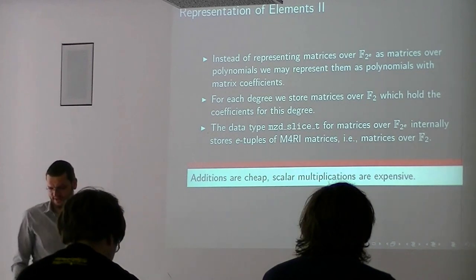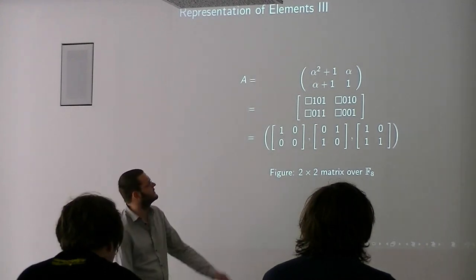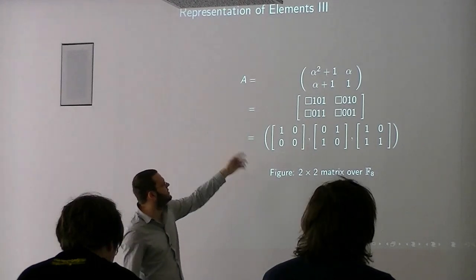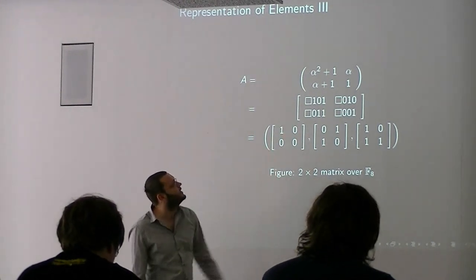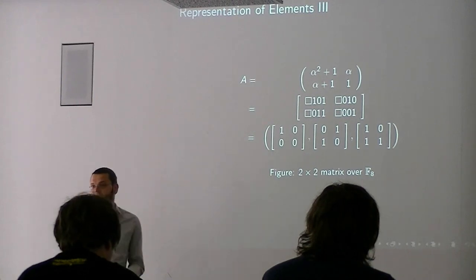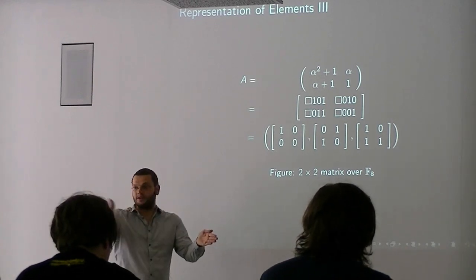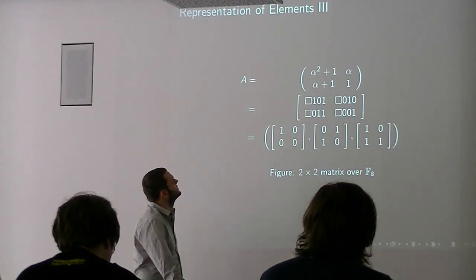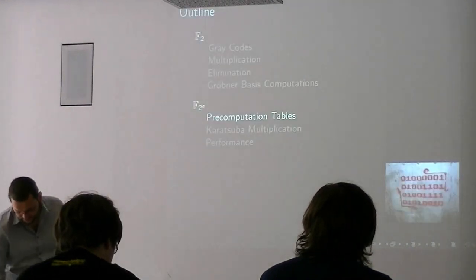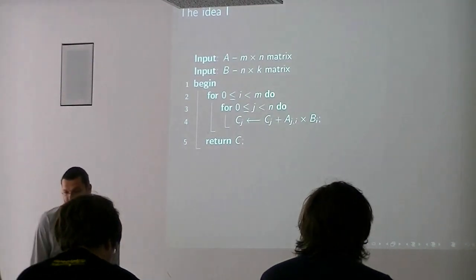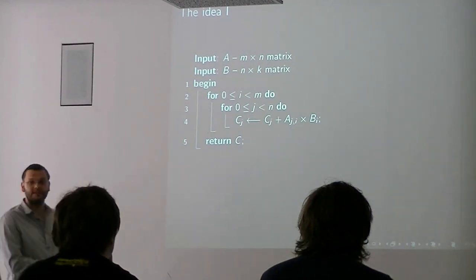We can represent elements in two ways - either as polynomials modulo the defining polynomial. If we do this, then we sometimes identify these polynomials with integers. These bits we write them as bit strings, and then we can identify them with finite field elements as integers, and that's our data type MZD, where we pack several of those into one machine word. And here, of course, because we pack them into one machine word, addition is not very cheap, but scalar multiplications are good.